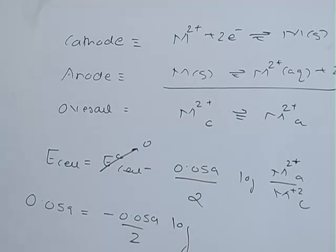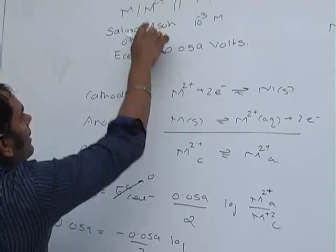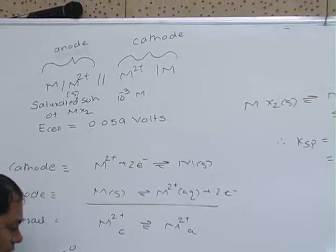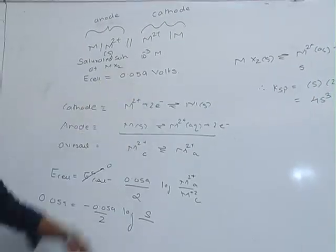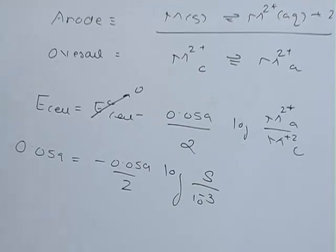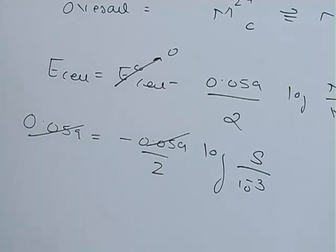The concentration of M²⁺ at the anode is unknown - it equals the solubility S. The concentration at the cathode is 10⁻³. So we get 0.059 divided by 0.059, which gives us 1.